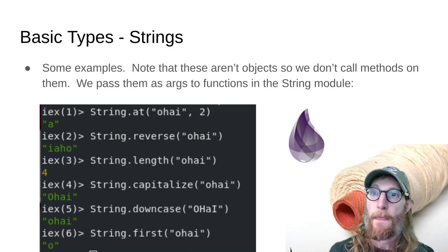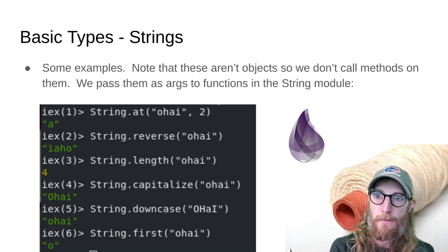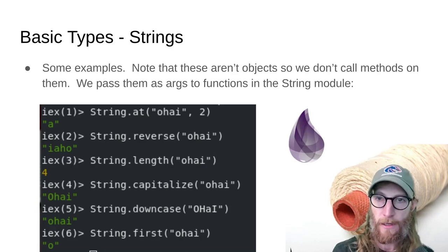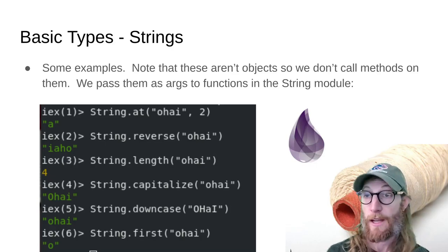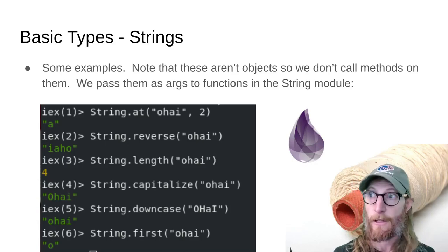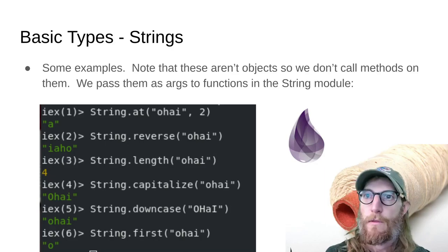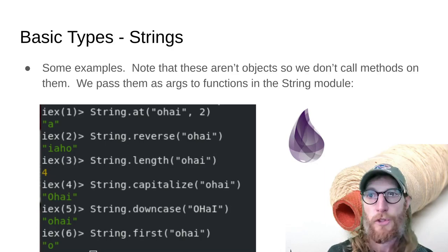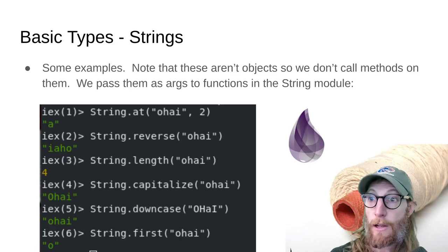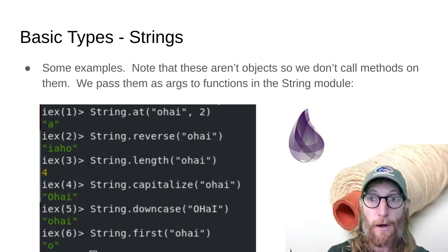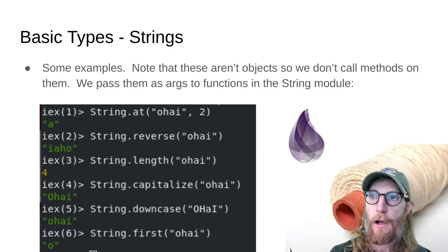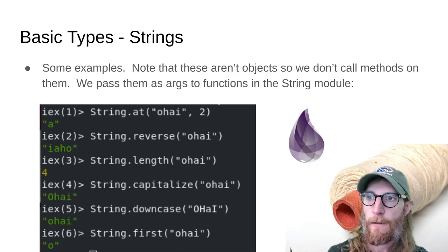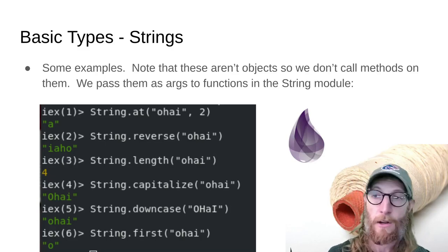Here are some string examples. Something important to remember is that these are not objects. In Elixir, we're not dereferencing an object and invoking a method on it. String is the name of the module — more or less just a namespace — and then the function name. So we're always passing in the string as arguments. Looking at the first example, String.at: String module, at function. You may notice these all follow a similar convention — the string is always going to be the first argument, which is important for what we'll get into later with pipelines.